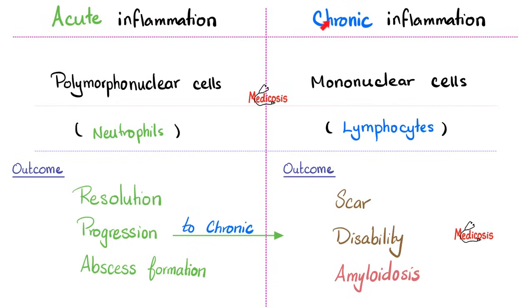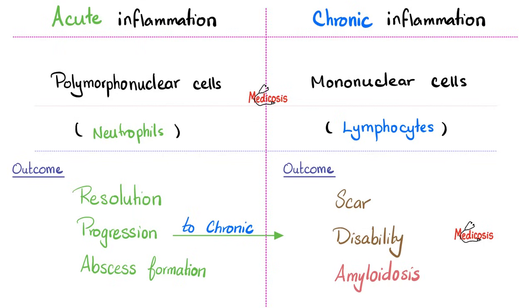What are the sequelae of chronic inflammation? It can leave a scar, it can make you disabled, or it can give you secondary amyloidosis. I've talked about amyloidosis in a separate video in this pathology playlist titled 'Amyloidosis.'